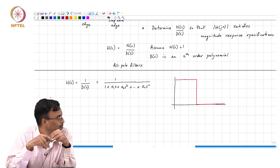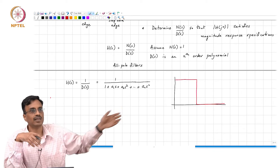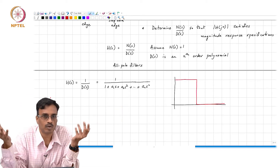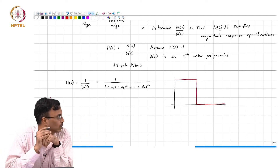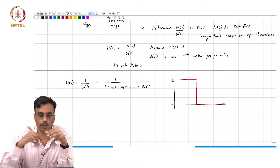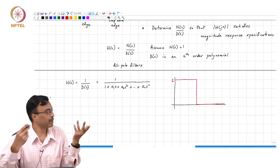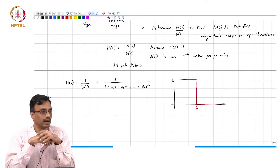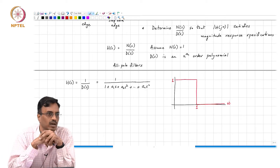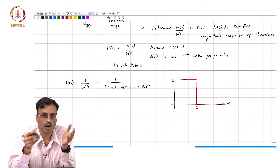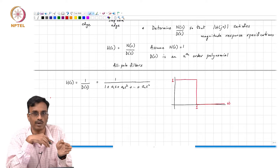A lot of filter design actually started out in this context, where people said let me try my best to approximate what is called the brick wall, very well knowing that you cannot get a perfect brick wall. Perhaps you could approach the ideal brick wall response by increasing the order of the filter. The ideal brick wall they were trying to approximate was that the magnitude response is 1 up to a cutoff frequency ωc, and they arbitrarily chose ωc to be 1 radian per second.